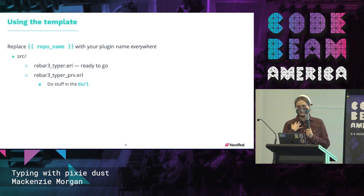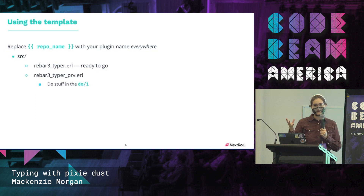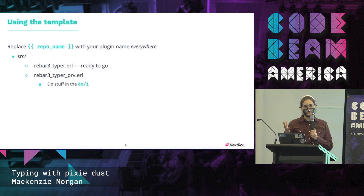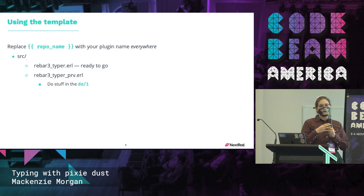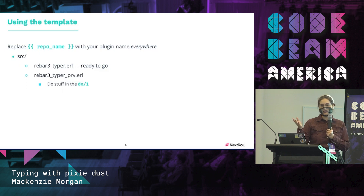Our plan was to get all of the options — parse CLI options, parse options out of rebar config, put those two together and decide priority on them, and then call relevant functions within Typer to make it go.